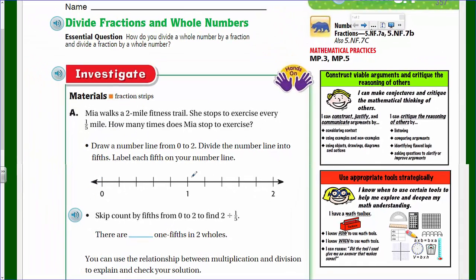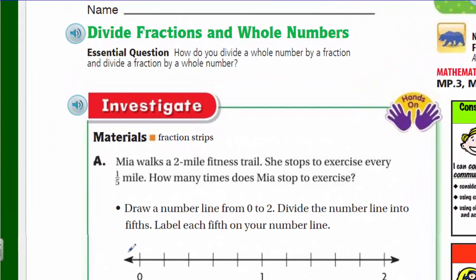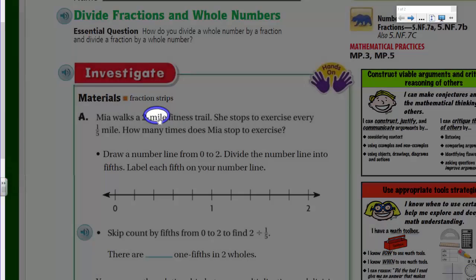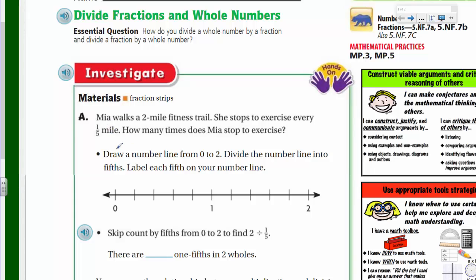Mia walks a two-mile fitness trail. She stops to exercise every one-fifth mile. How many times does Mia stop to exercise? Why should we use division to solve this problem? We need to find how many groups of one-fifth can be made from two. The two-mile distance is our whole, and she stops every one-fifth mile.